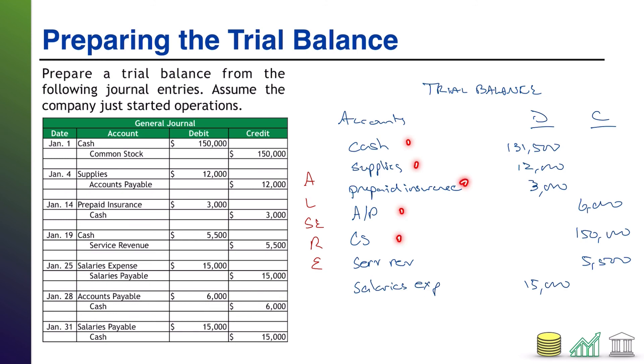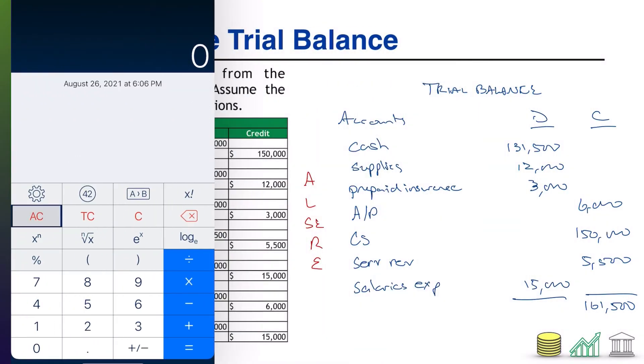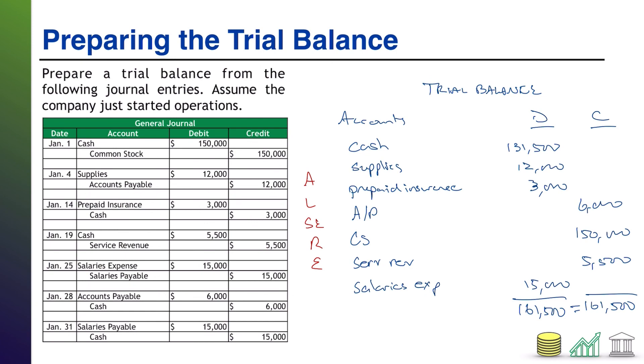Alright. We have used one, two, three, four, five, six, seven accounts. We had eight T accounts, but one of them zeroed out, so it's not listed here. We've got them all. One last step to our trial balance, and that is tally up the two sides and make sure that they are equal. So the credit side, it looks like I can just do on my own. I have 150 plus six, 156 plus 5,500 puts us at 161,500. The debit side, I'm just going to go ahead and pull out the calculator since it's a few more numbers. 131,500 plus 12,000 plus 3,000 plus 15,000 puts us at 161,500. They are equal. That is a great sign. That means that the trial balance does not indicate that there are errors. It's not perfect. There could be errors undetectable by the trial balance, but at least we know that any errors that would be detected don't exist.